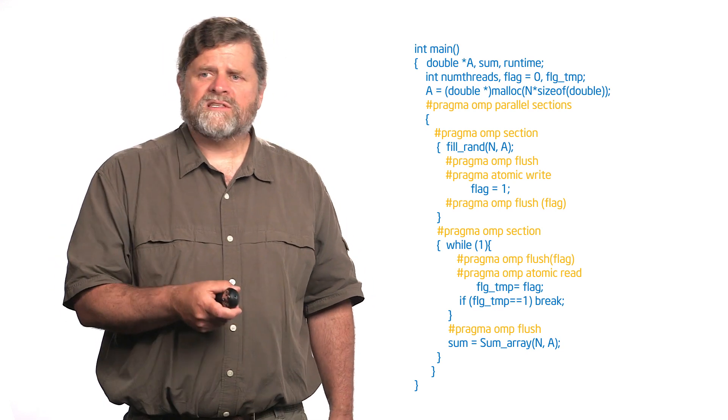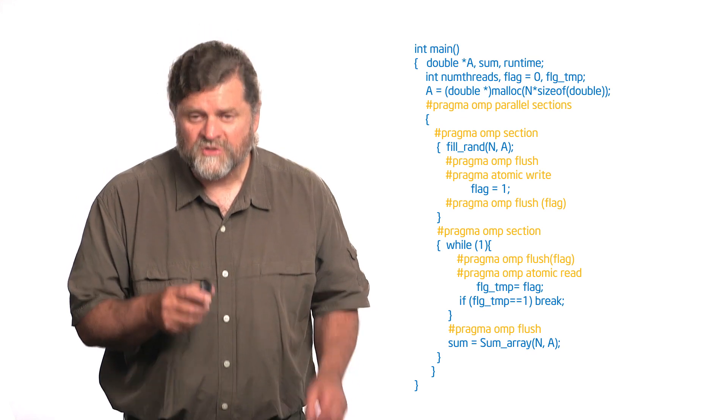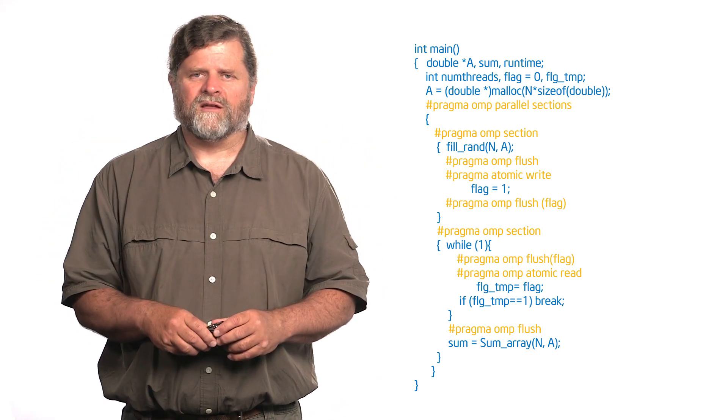Now I know it's safe that the producer is done. So now I do my full flush and I consume A. This is a race free correct version of doing the producer consumer pairwise synchronization that will work 100 percent of the time on 100 percent of the machines.